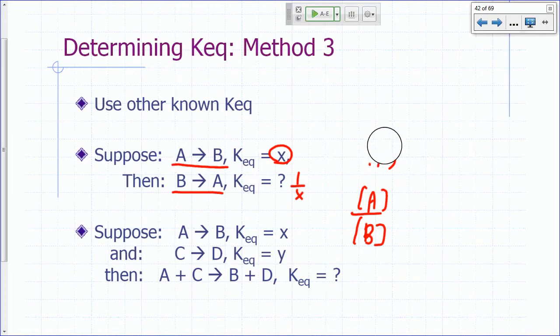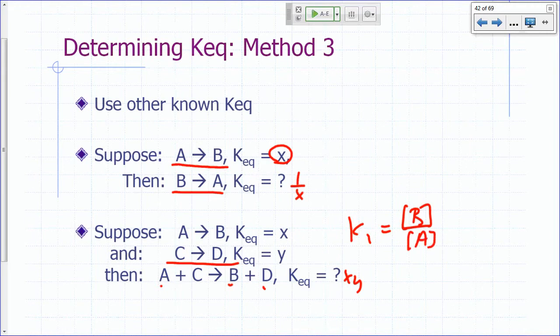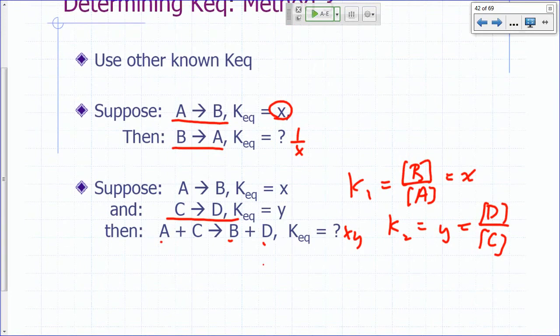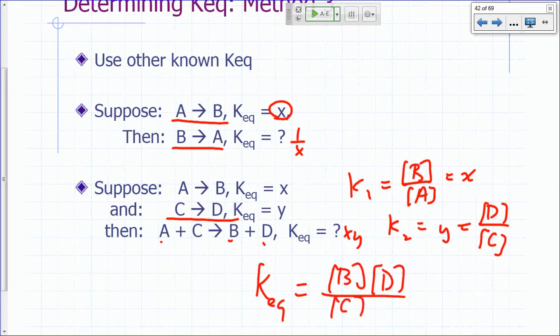What if you add two reactions together? Like this one. A going to B and C going to D. If you add these, you have A plus C gives you B plus D. What's the KEQ for this? That would just be the product of the two equilibrium constants, right? Because K1 here would be B over A and K2, which is our X, we call that X. And K2, which we call Y here, is going to be D over C.